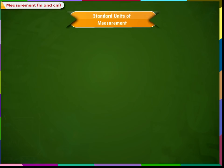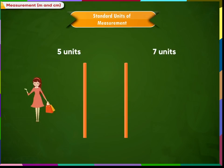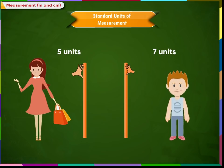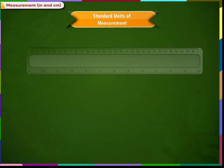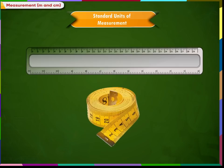We observed that non-standard units of measurement do not give the same results. So we need to use some standard units for measuring lengths. Otherwise, the measurements of an object will be different when measured in different ways. Some standard measuring tools are a scale and measuring tape.